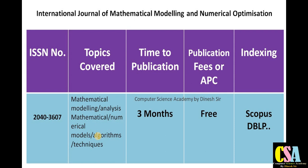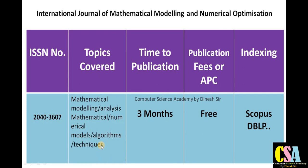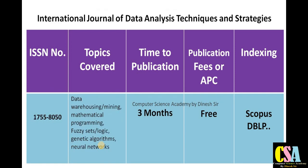Next is the International Journal of Mathematical Modeling and Numerical Optimization. Topics covered include mathematical modeling, analysis, numerical models, algorithm techniques, and related areas. This is especially suited for mathematics researchers, students, and faculty. It is a quick publication and Scopus-indexed journal, also indexed in DBLP, with no publication charge. Your research paper will get published within three months, free of cost.